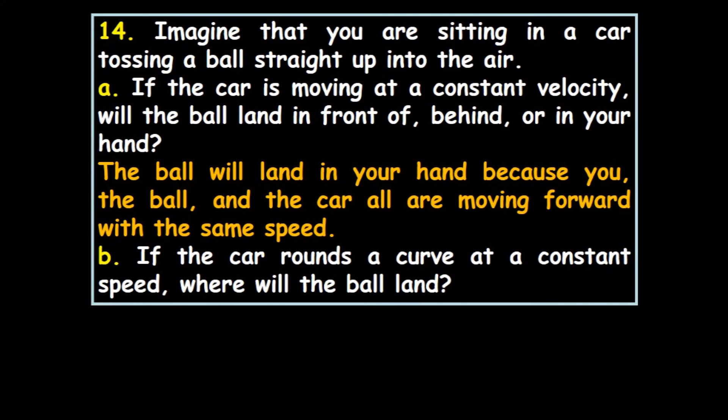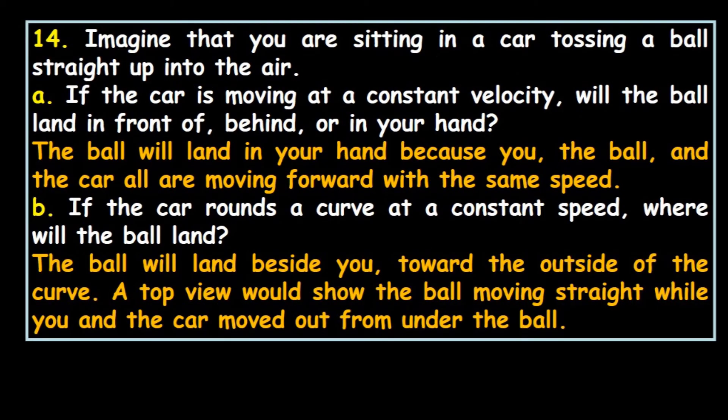If the car rounds a curve at a constant speed, where will the ball land? The ball will land beside you, towards the outside of the curve. The top view would show the ball moving straight while you and the car moved out from under the ball.